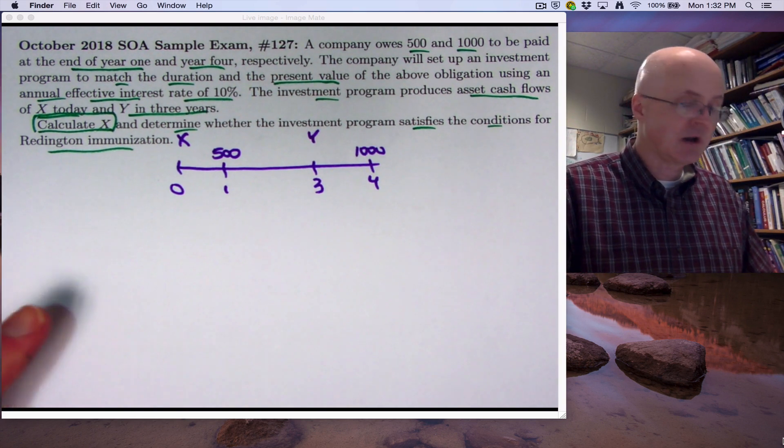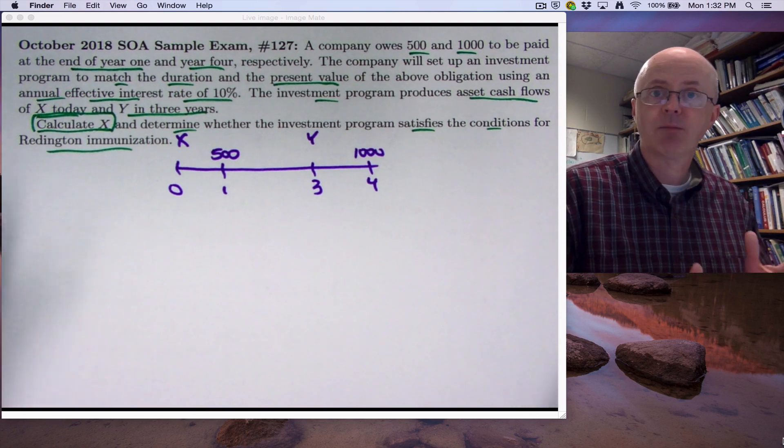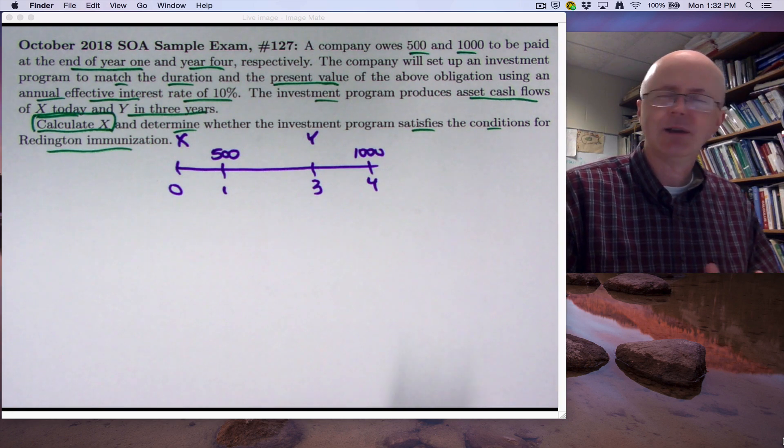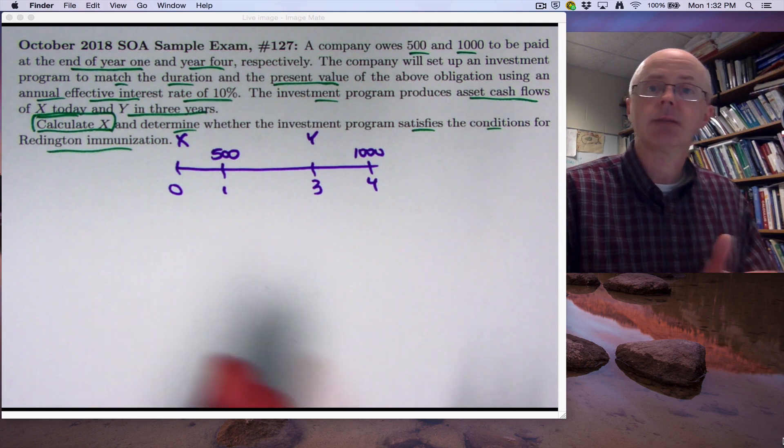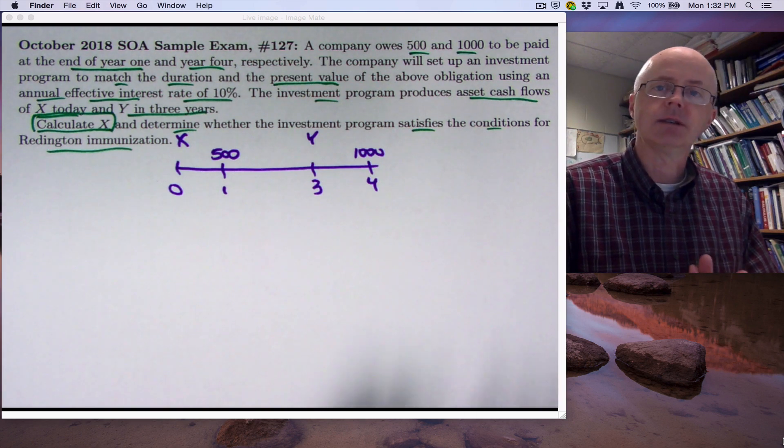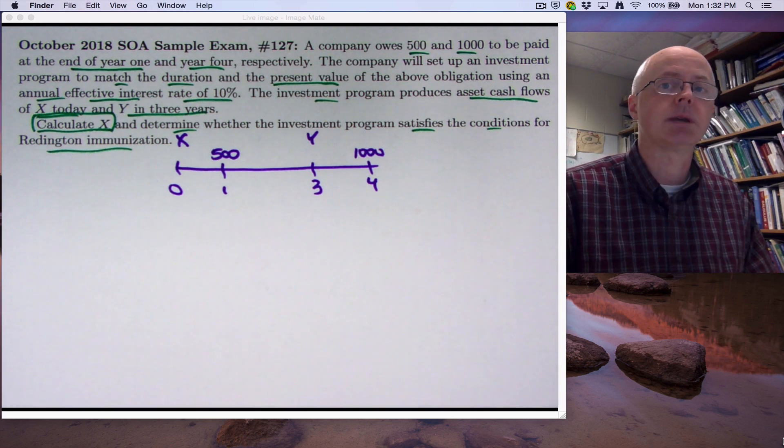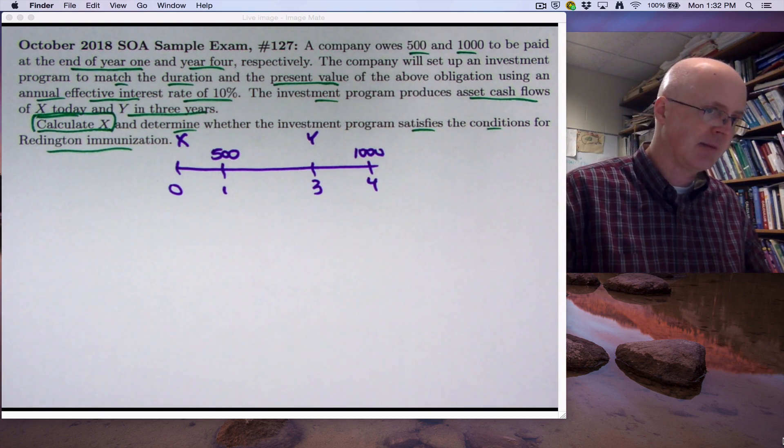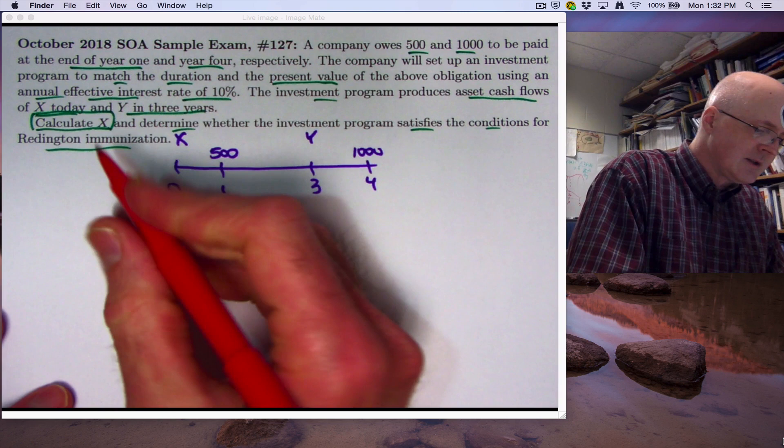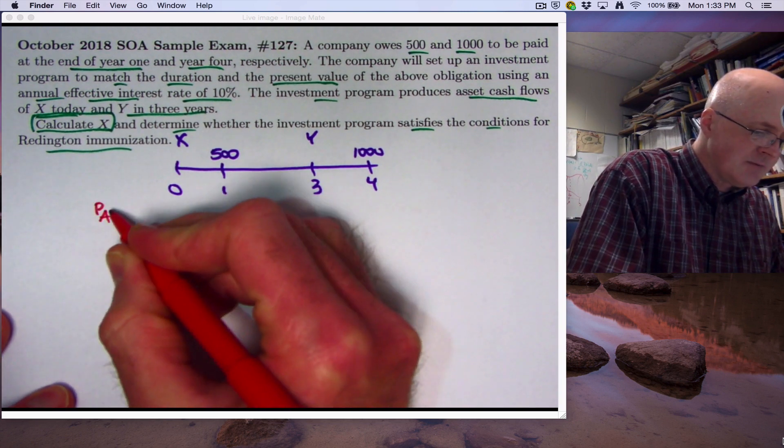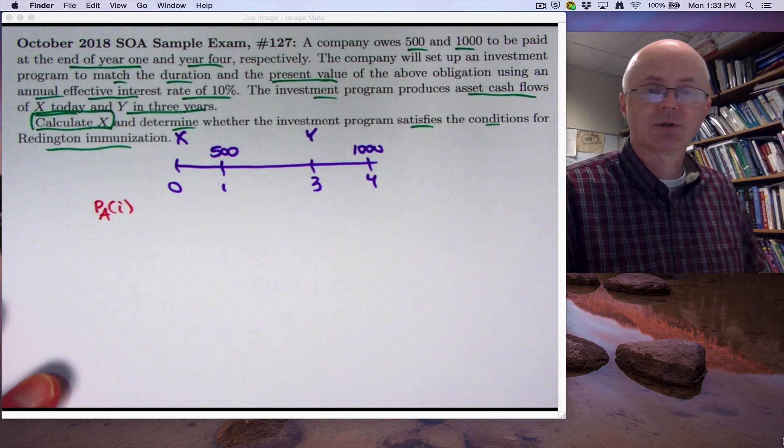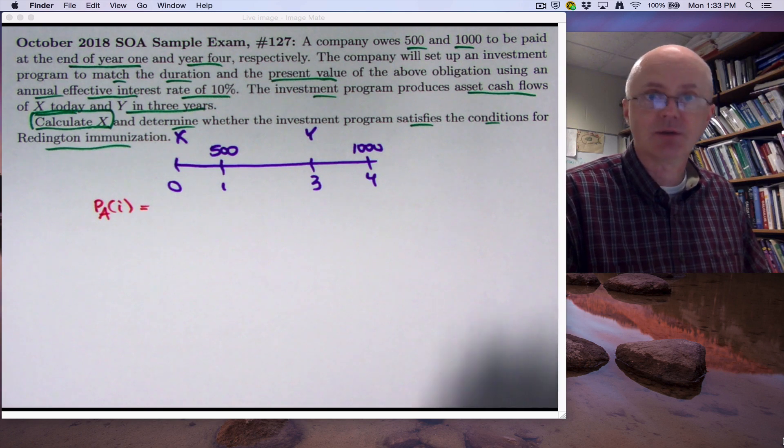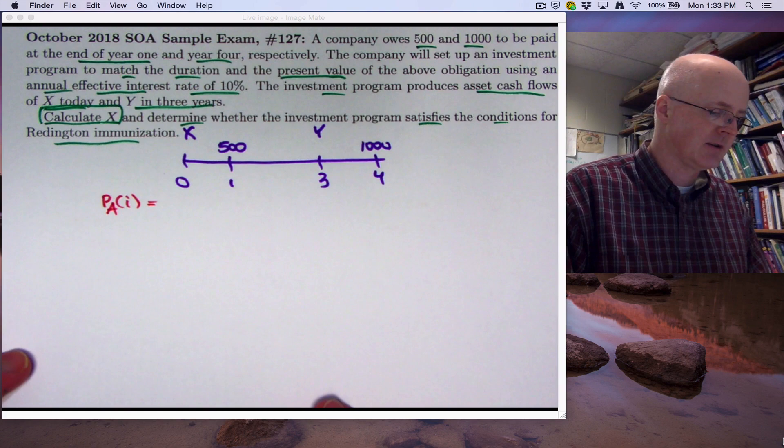Two videos ago, in the first video about immunization, we did talk about matching present values to help us solve for the unknowns. The last video, number 170, we said that you don't really have to think of it in terms of present values. You can think about it in terms of time evaluation of these cash flows at different moments in time, some positive moments in time, and you can still get the same answer. This is phrased in terms of present value. I think I will go back to thinking about present values for this video.